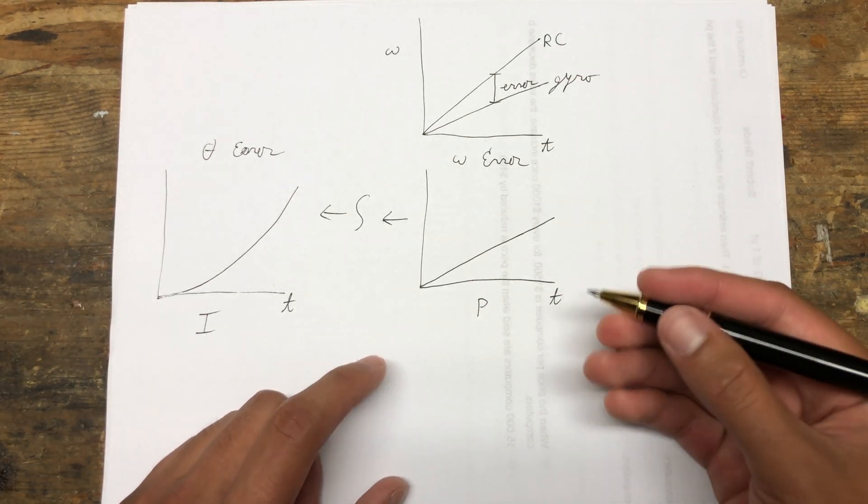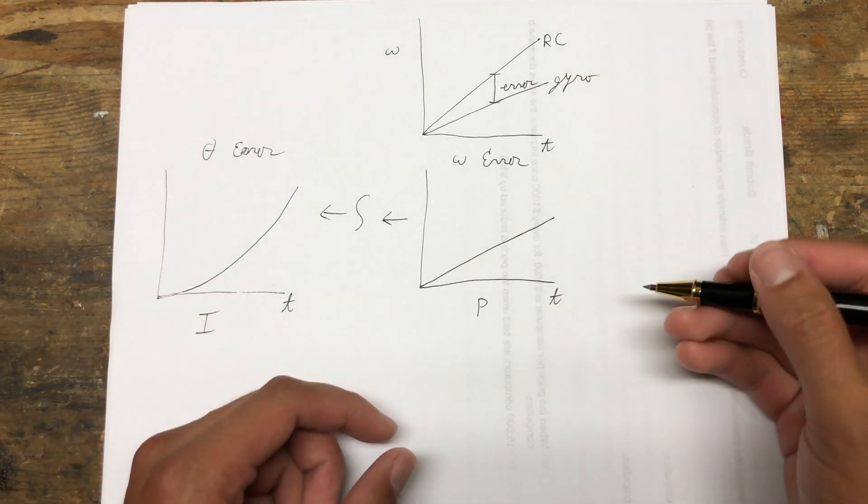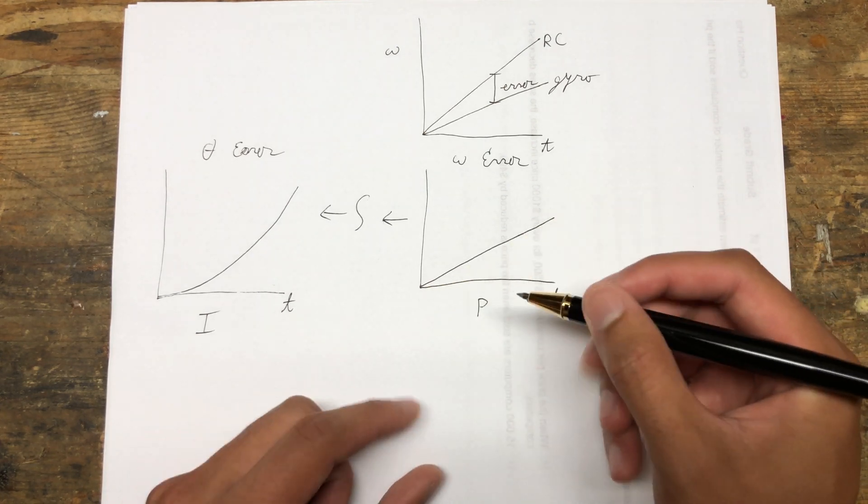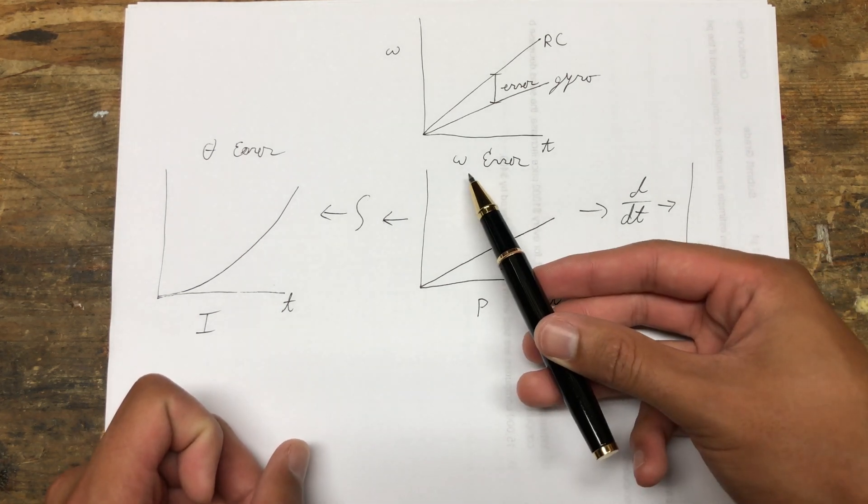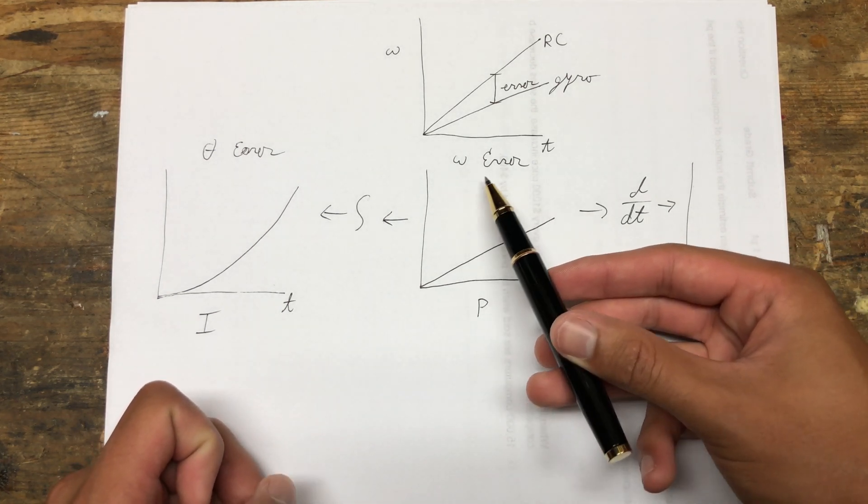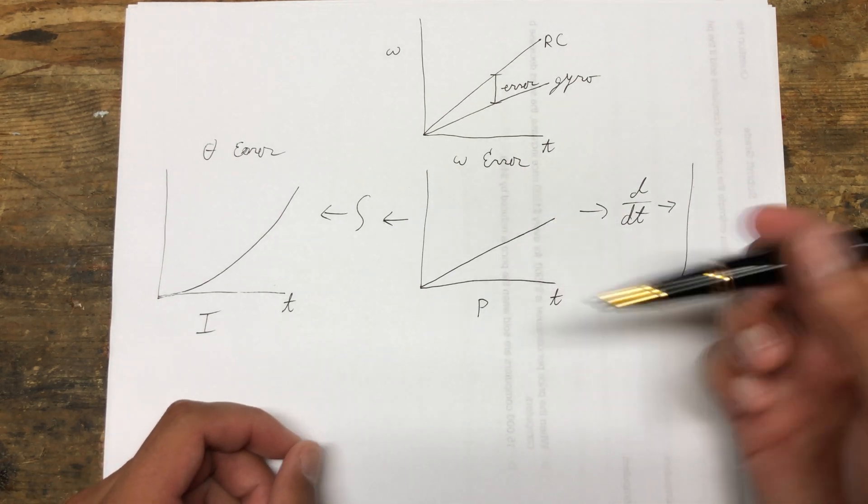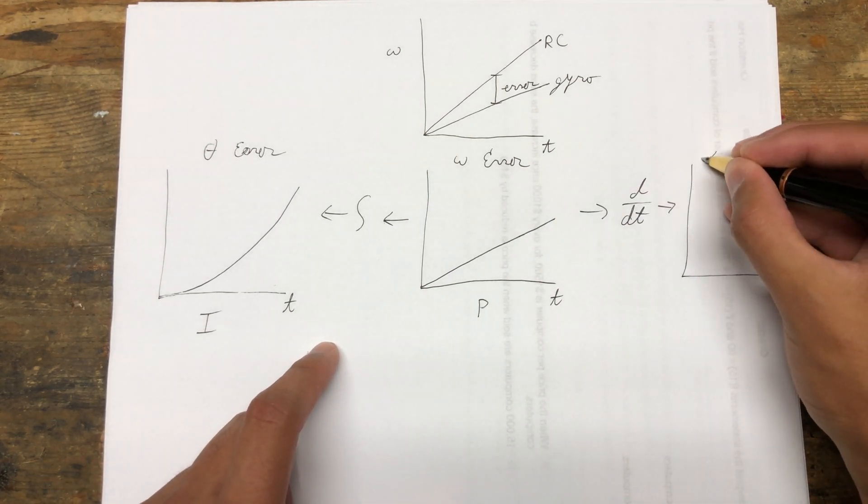Now, if we go the other direction and we take the derivative of the angular velocity error, that is the slope of the angular velocity error, the rate of change of the angular velocity, also known as the angular acceleration alpha.